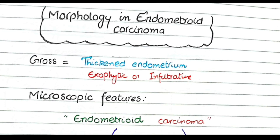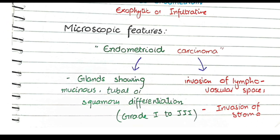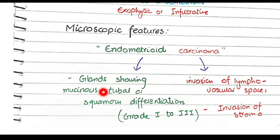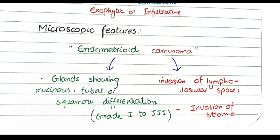Regarding morphology of endometrioid carcinoma: grossly, you will see a thickened endometrium with exophytic or infiltrative lesions, reflecting its origin in endometrial hyperplasia. Microscopically, the tumor shows glands with mucinous, tubular, or squamous differentiation, ranging from grade 1 to grade 3. The term 'carcinoma' implies invasion of the lymphovascular space and stroma.